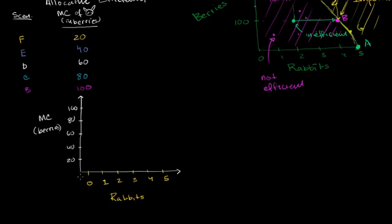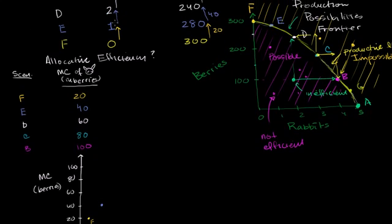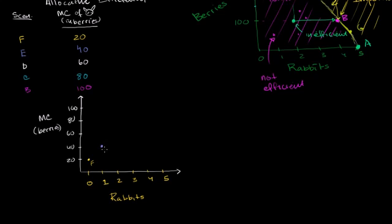Scenario F is when we had zero rabbits, and the marginal cost of getting another rabbit is 20 berries — that's scenario F right there. Scenario E: we already had one rabbit, and the marginal cost of getting another is 40 berries. Scenario D: marginal cost is 60 berries — we already have two rabbits thinking about getting a third. Scenario C: we already have three rabbits, thinking about getting a fourth — marginal cost is 80. And scenario B: we have four rabbits and the marginal cost of a fifth is 100 berries.